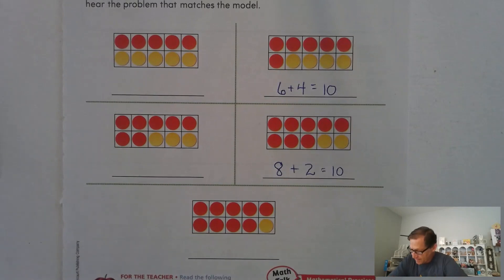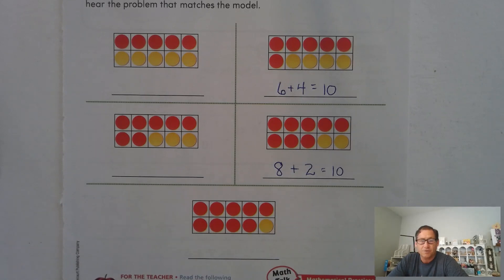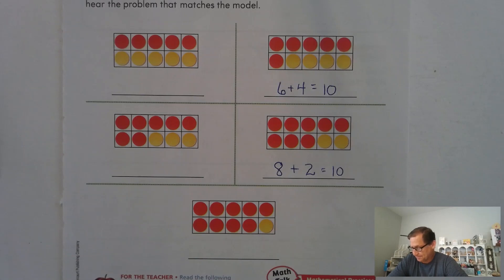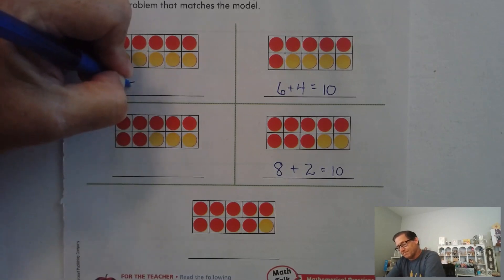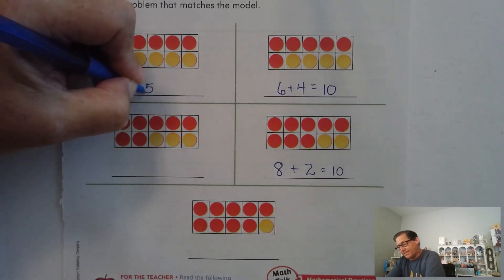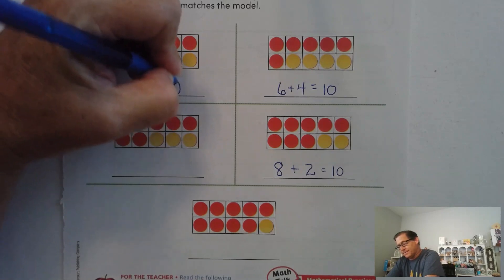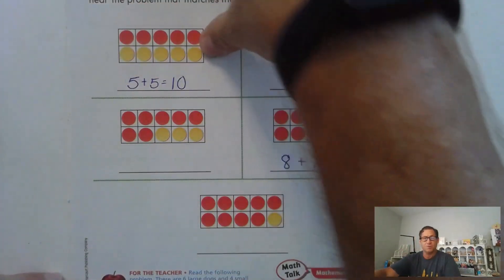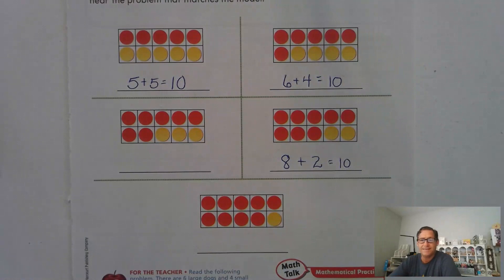Let me give you another one. There are five large dogs and five small dogs. How many dogs are there? Which one represents that? That was the first 10-frame, right? Five large dogs, five small dogs — five and five more is 10.